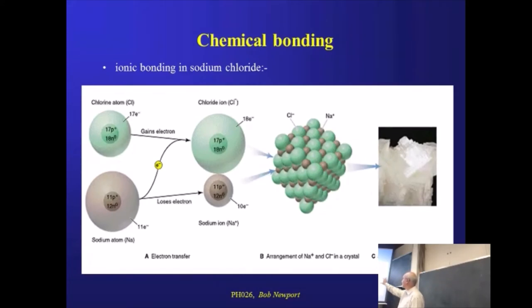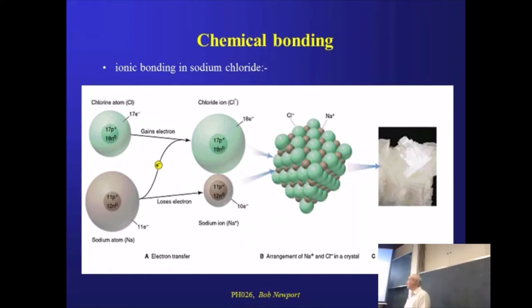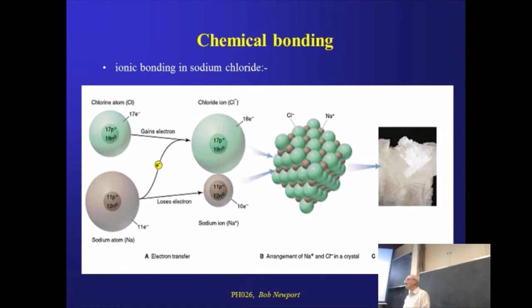Here's our crystal structure of sodium chloride. You can see, as you would expect, that we have alternating positive and negative ions making up that structure.